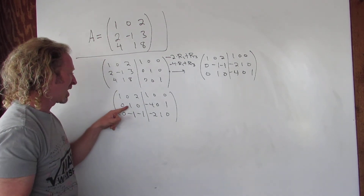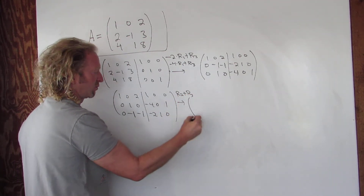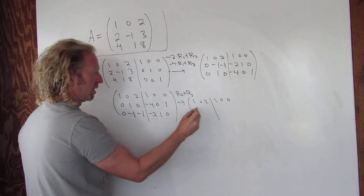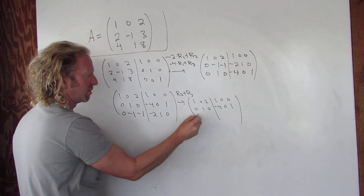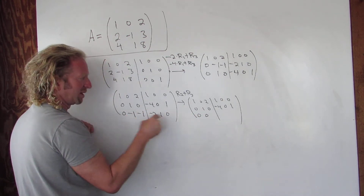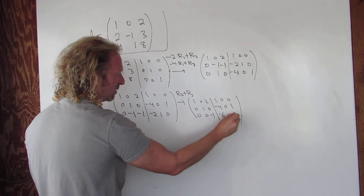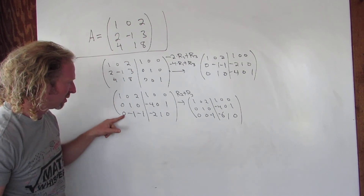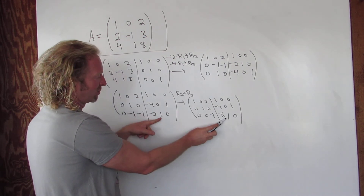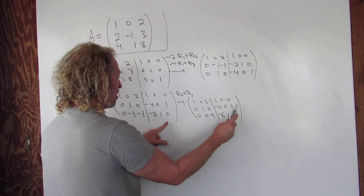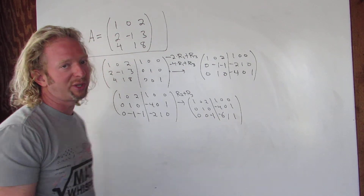Now we need to make the (3,2) entry a 0. We'll just add row 2 to row 3. First row is unchanged: 1, 0, 2, 1, 0, 0. Second row: 0, 1, 0, negative 4, 0, 1. Adding rows 2 and 3: 0 plus 0 is 0, 1 plus negative 1 is 0, 0 plus negative 1 is negative 1, negative 4 plus negative 2 is negative 6, 0 plus 1 is 1, 1 plus 0 is 1. Really easy to mess up.